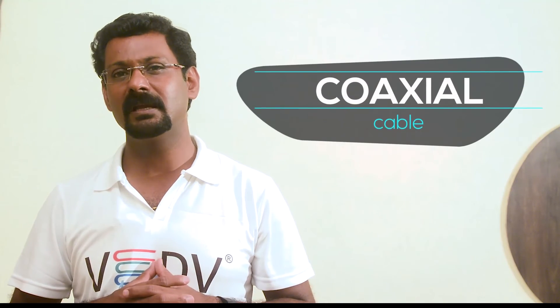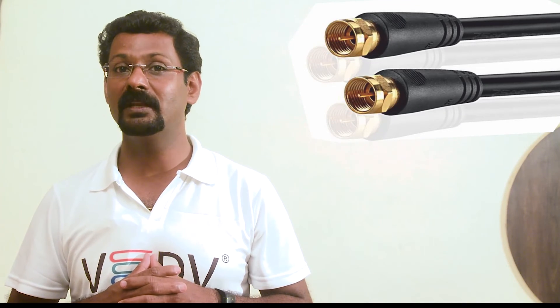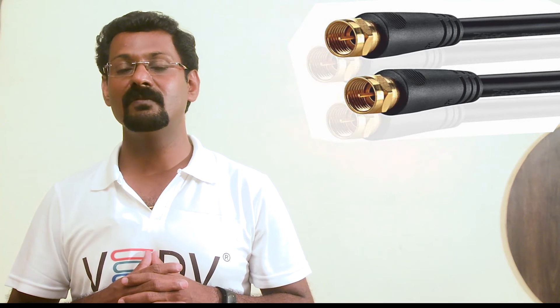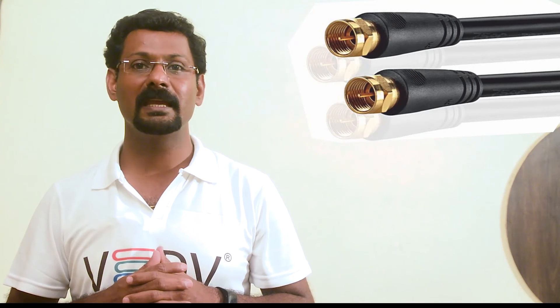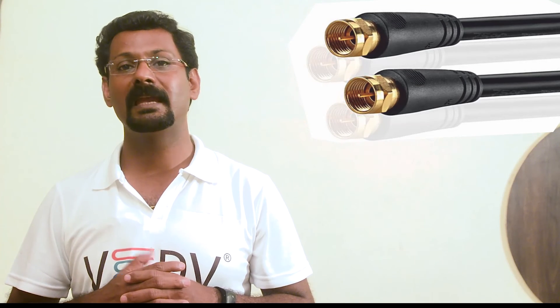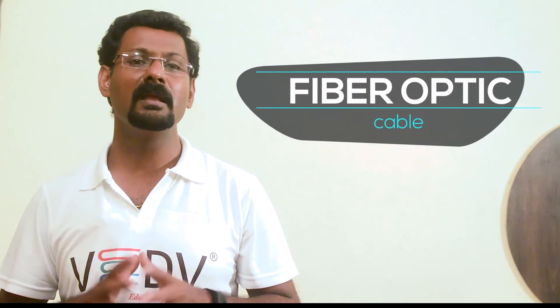Coaxial cable: a coaxial cable consists of a solid conductor running inside a solid or braided outer conductor. It is used over distances of up to 1 kilometer and can achieve transfer rates of 100 Mbps. Coaxial cable is of two types: 75-ohm cable, used in cable TV operations, and 50-ohm cable, used for high-speed broadband internet.